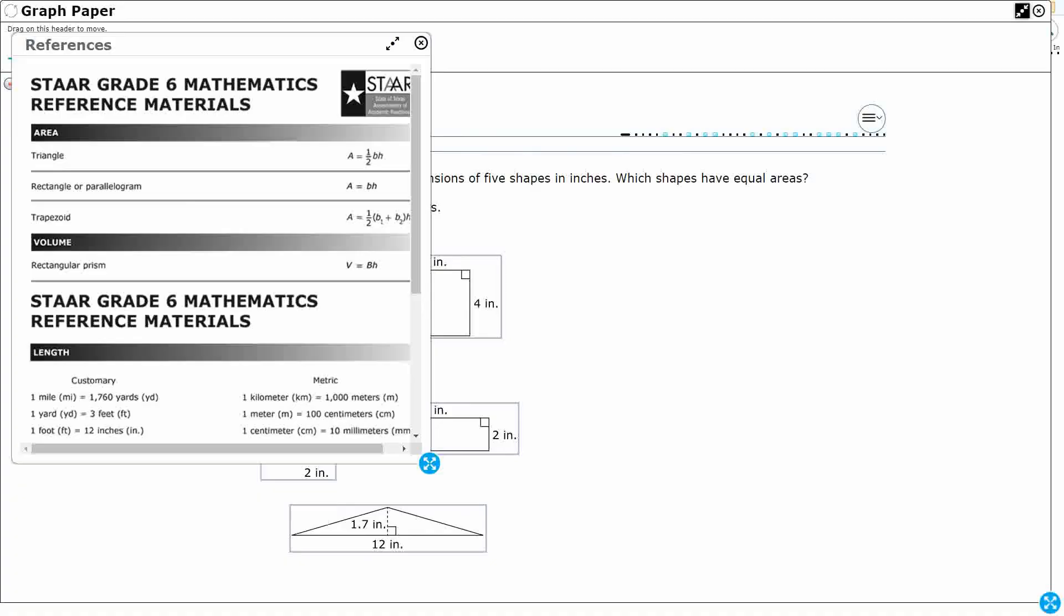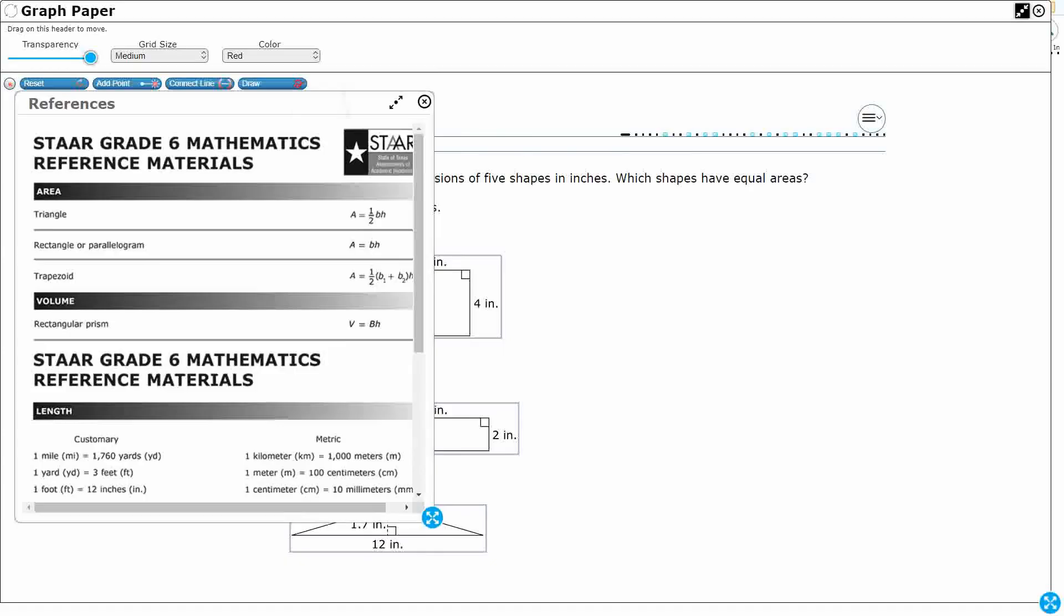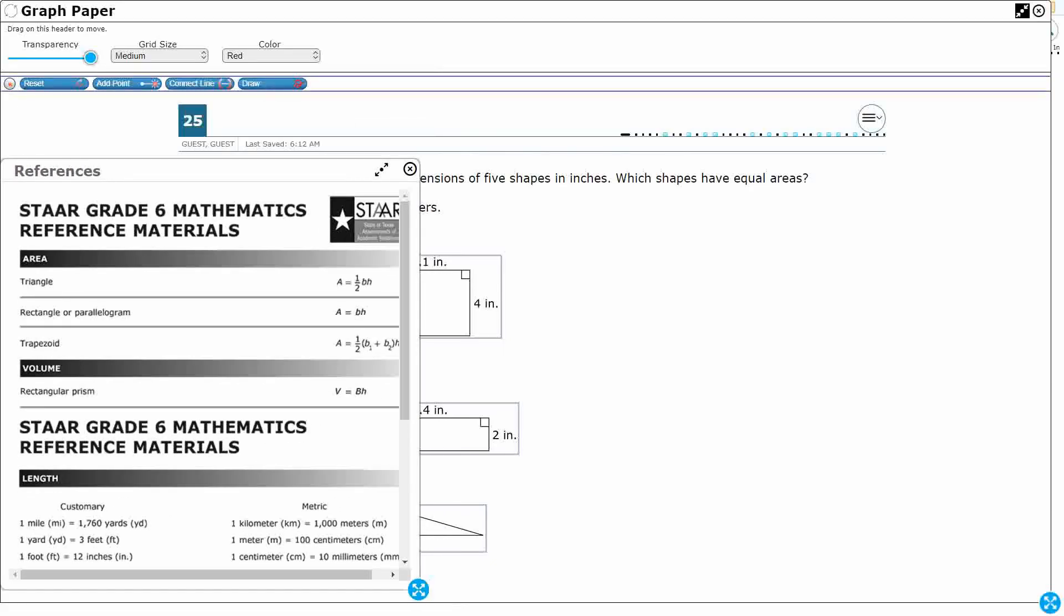Alright, so the area of a triangle is going to be one-half base times height. So let's put that there, area of a triangle equals one-half base times height.